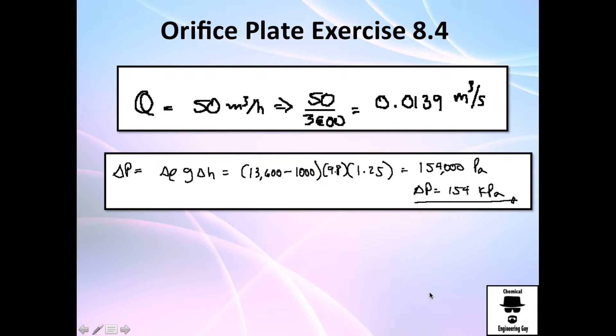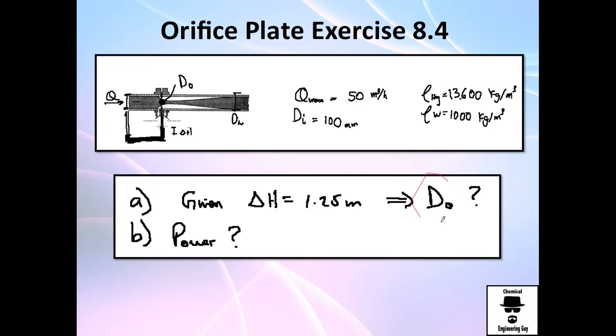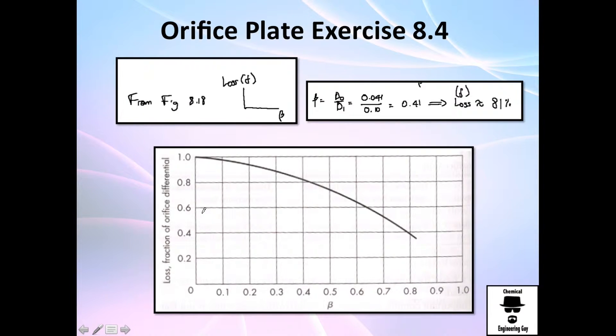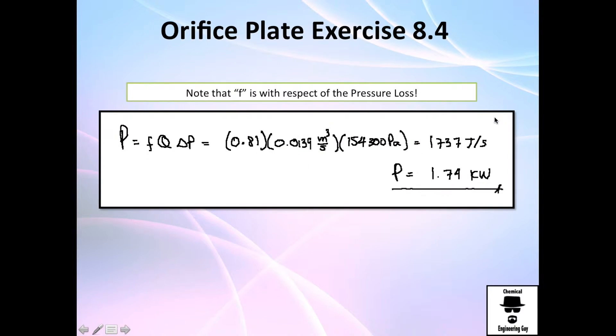Good. And not only I wanted to calculate the diameter, I want to calculate the power requirement. So let me calculate how much friction are we generating. So from this figure, we're going to calculate the loss. So we have beta is the diameter of the orifice divided by the pipe's diameter. We got 0.41, so let me find out 0.41. You go here and I got something about here. So the loss factor is 81%.